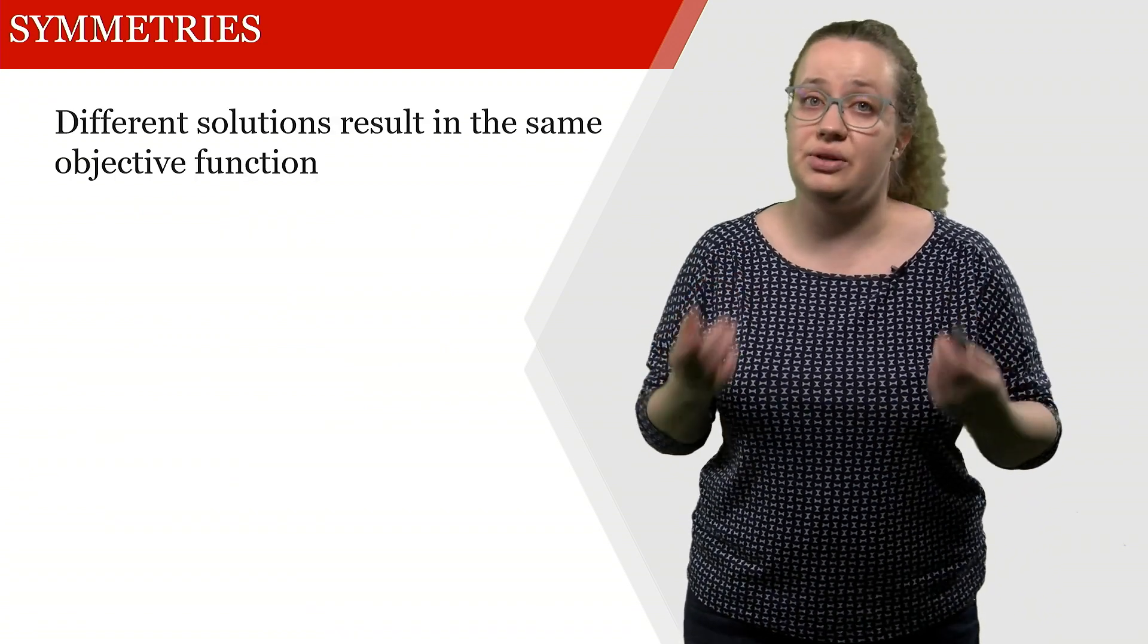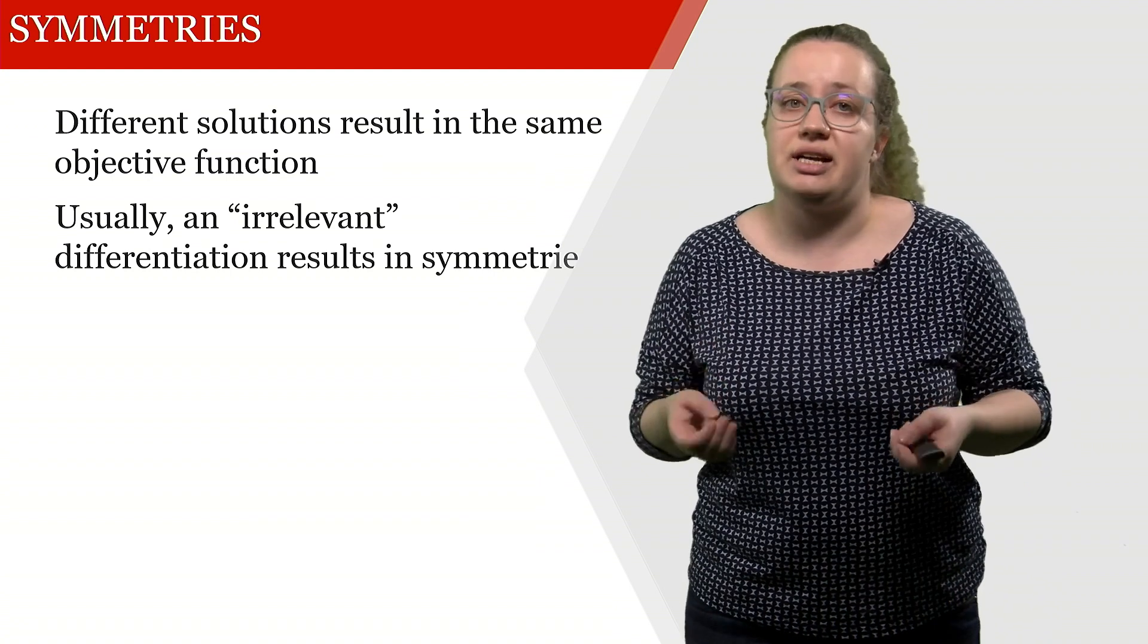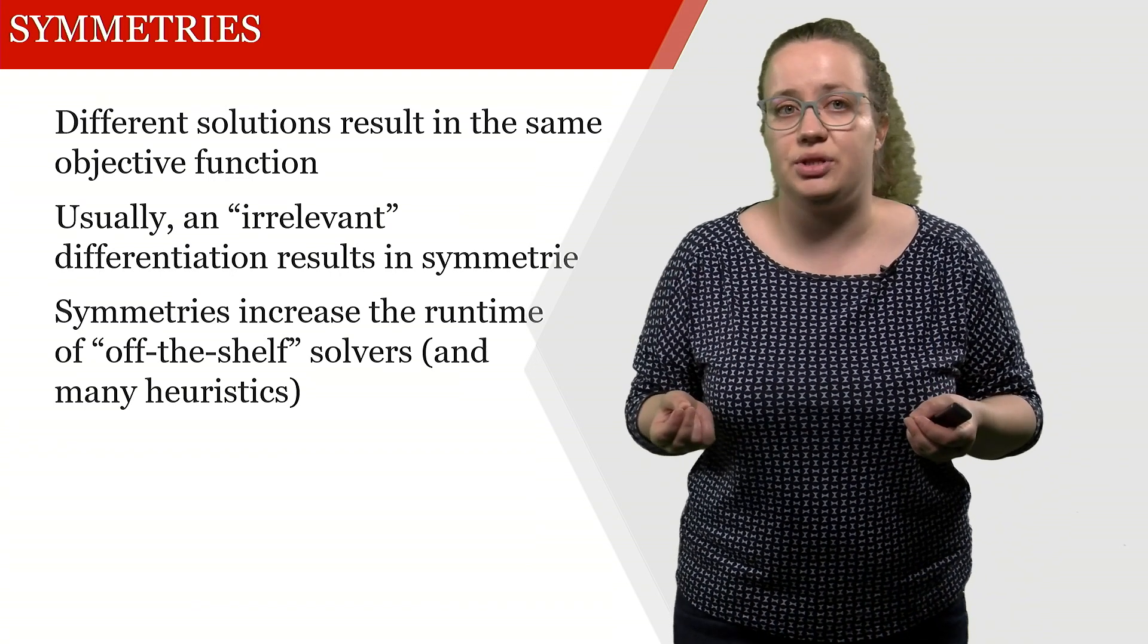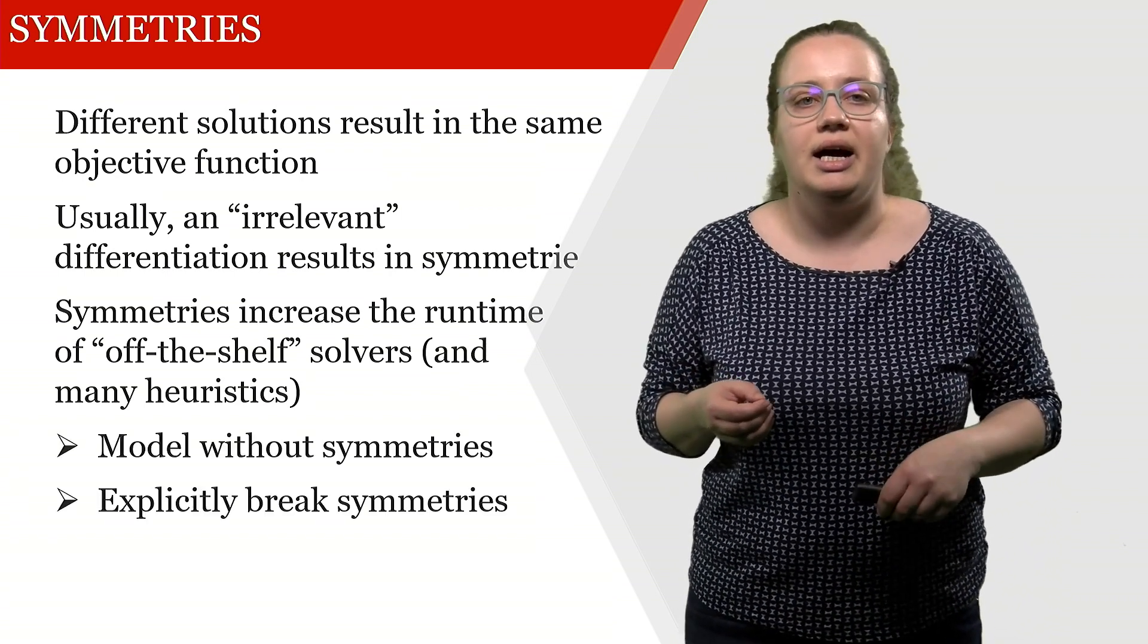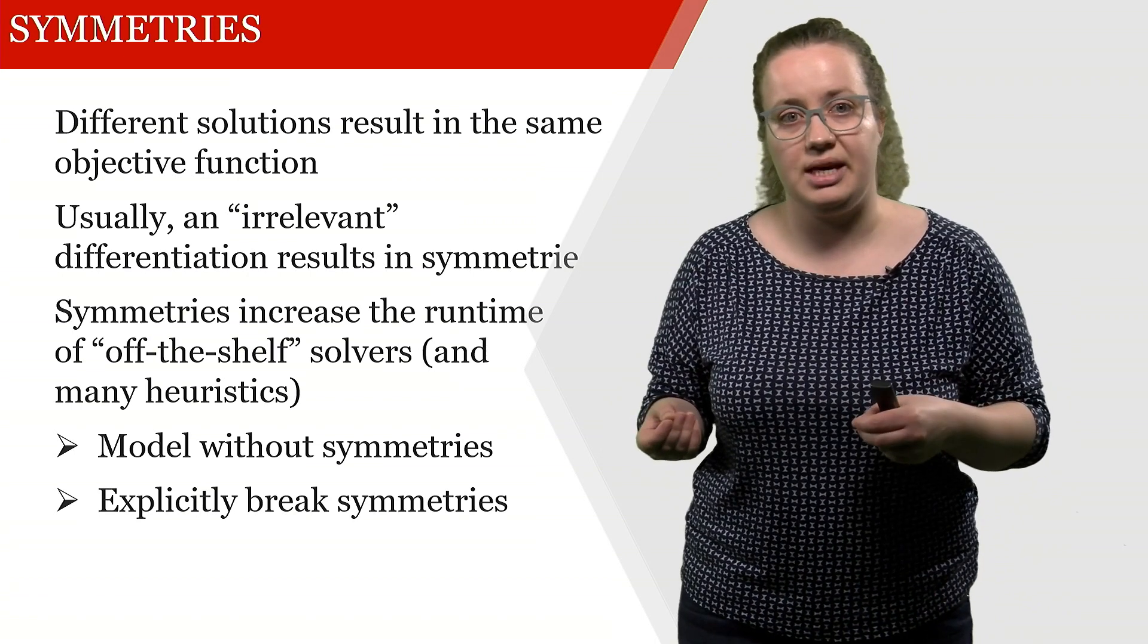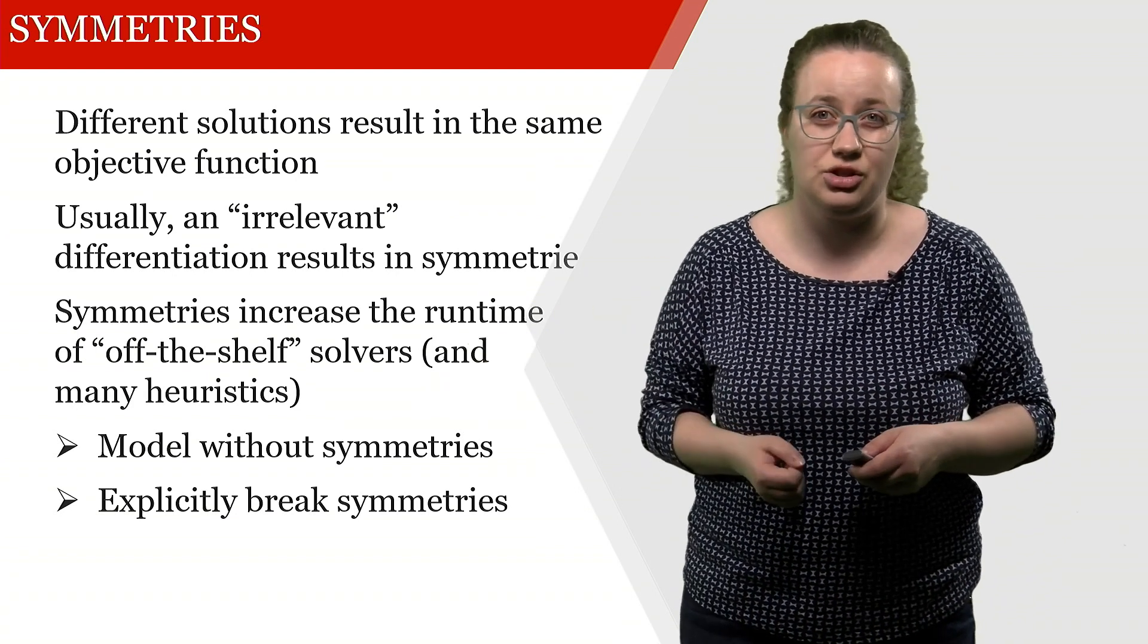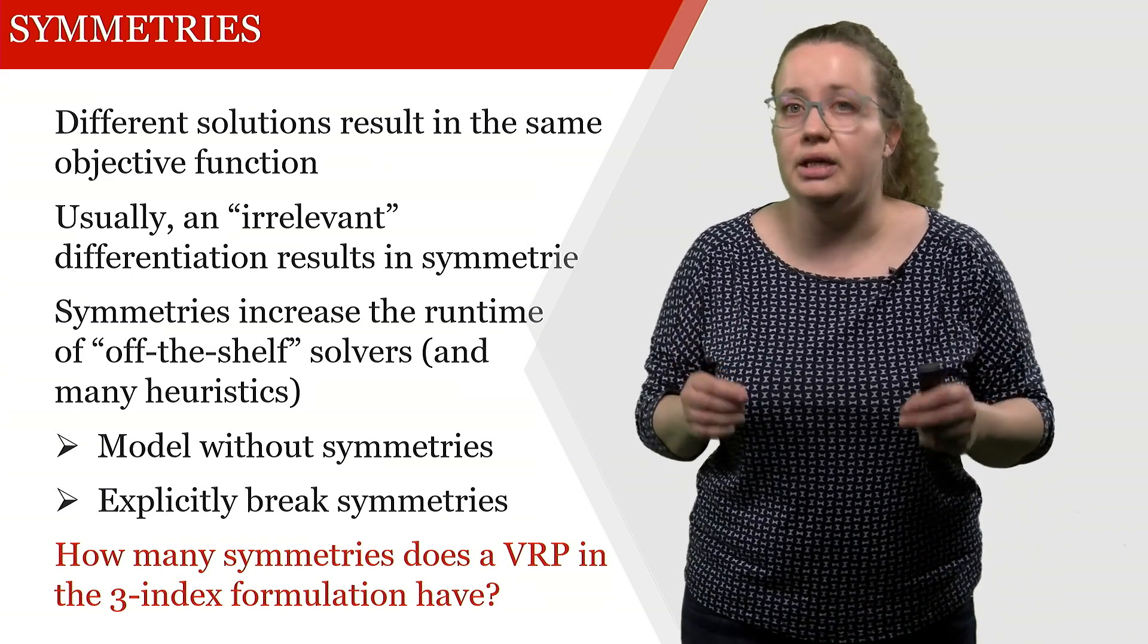A symmetry is if different solutions result in the same objective function value, and they usually are a result of an irrelevant differentiation. So for example, our differentiation between the red and the blue cargo bike. And for most off-the-shelf solvers, and also quite a few heuristics, these symmetries increase the runtime quite significantly. And what we thus have to do is we have to either come up with a model that doesn't have symmetries in the first place, or we have to explicitly break those symmetries. For example, by saying that the red truck always goes to location one, and the blue truck always visits location two. What I would like you to look into is how many symmetries does a VRP in the three-index formulation have.